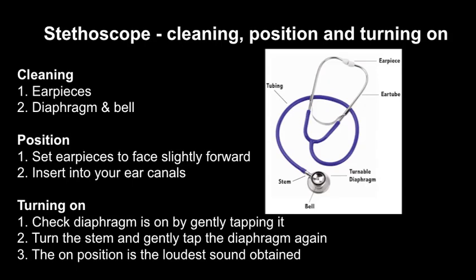It is vital that you familiarise yourself with the use of a stethoscope, as poor technique and faulty equipment may result in an inaccurate blood pressure reading. Prior to use, ensure that the earpieces, diaphragm, and bell are all cleaned in adherence to infection control precautions. Set the earpieces to face slightly forward and insert into your ear canals to ensure correct position. Ensure that the diaphragm is on by gently tapping it. Turn the stem and gently tap the diaphragm again — the on position is from the loudest sound obtained.